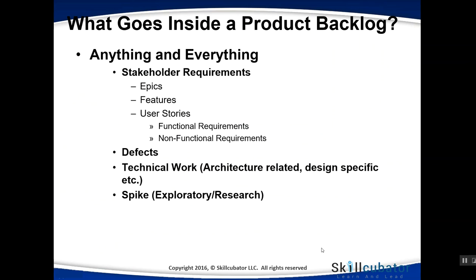A product backlog contains anything and everything that needs to be done towards the completion of the project. Any work that needs to be accomplished as part of the project must go into the product backlog. That includes stakeholder requirements — broken down into smaller components: epics, features, and user stories. User stories can be functional requirements or non-functional requirements (NFRs). That is the main component of any product backlog.